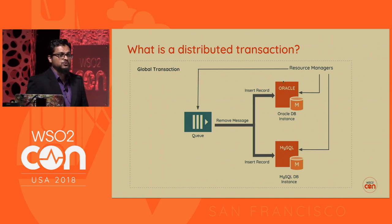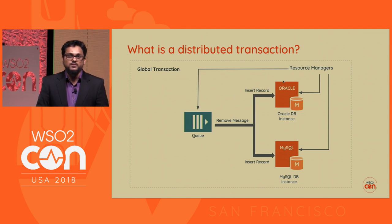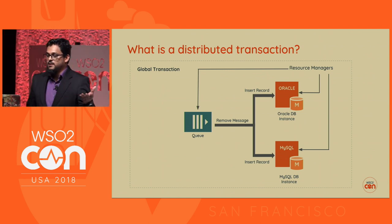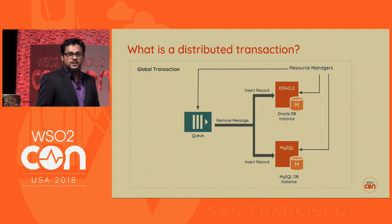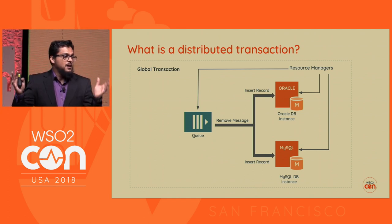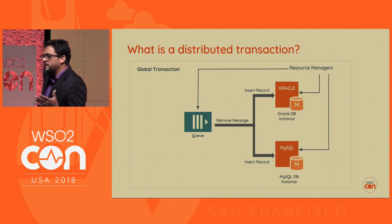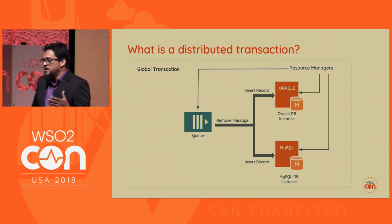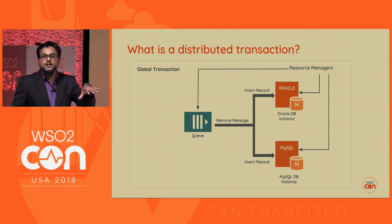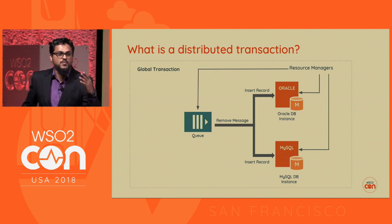We have resource managers that handle each of these resources — one for the Oracle database, one for the MySQL database, the queues, and so on. Within a single process, this is how you manage an XA transaction. The condition is this should happen within a single thread context so that the transaction context can be maintained.